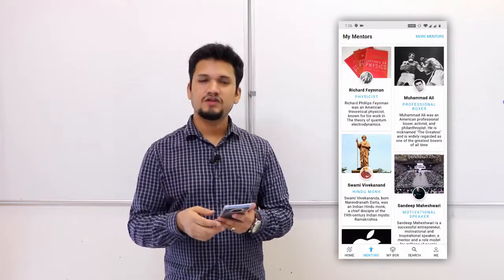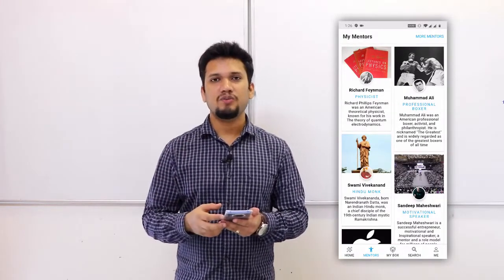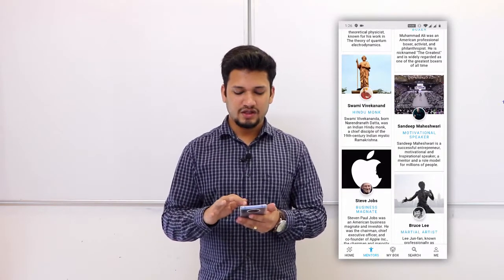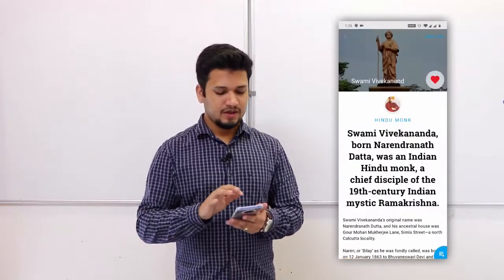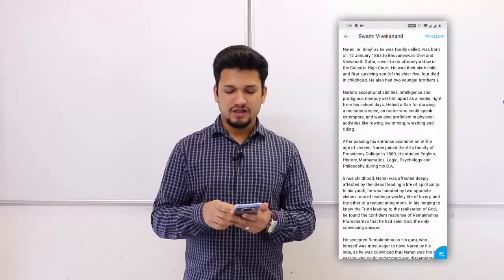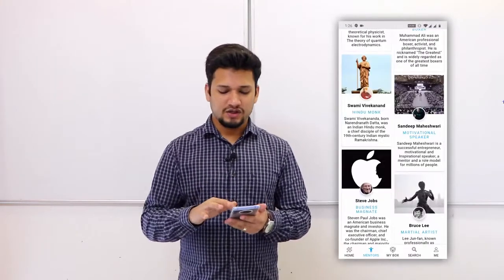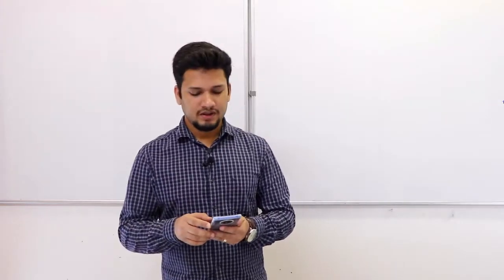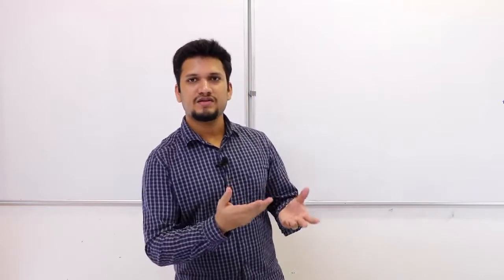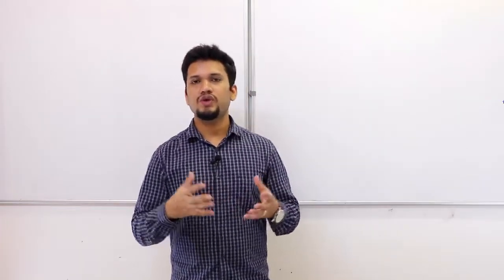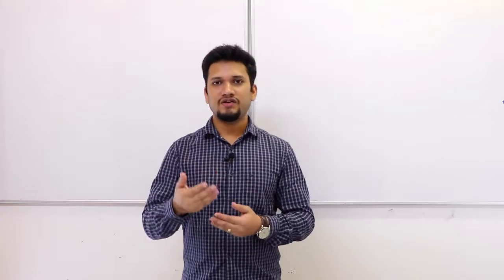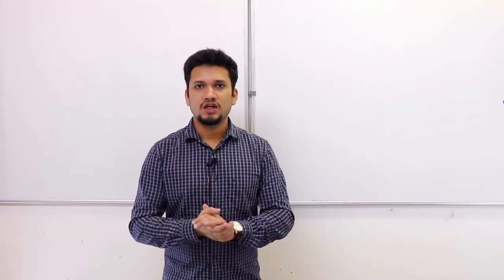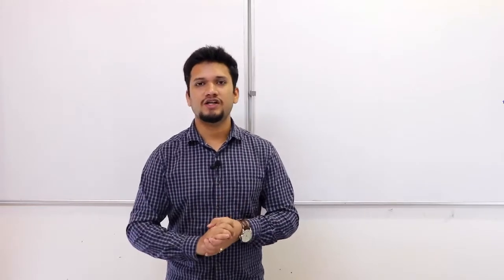First, I will show you what this application contains and then we will figure out the things that we need to develop for our backend system. This application is Where is my Motivation app. This application first shows you the screen which has content generated by the users. You can scroll this and it provides paginated content for your application. There are various other options also in the application.